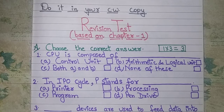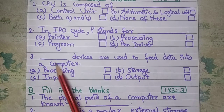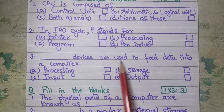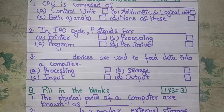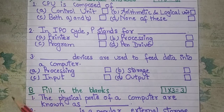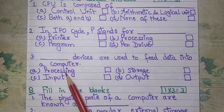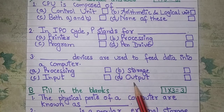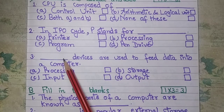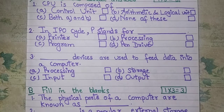Third question: Blank devices are used to feed data into a computer — that means, which devices allow us to enter data or instructions into a computer? Options are: A) Processing, B) Storage, C) Input, D) Output. Select the correct answer and write it in the blank.